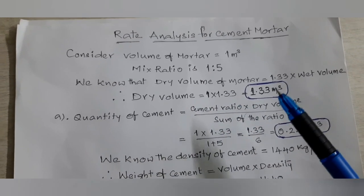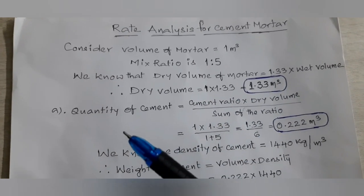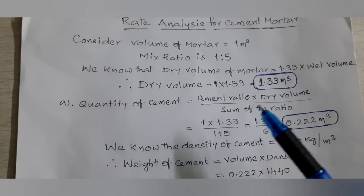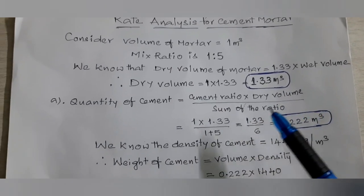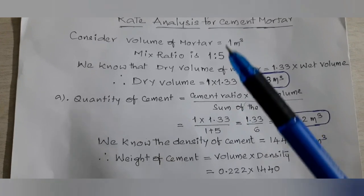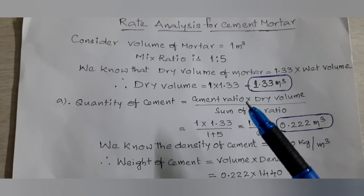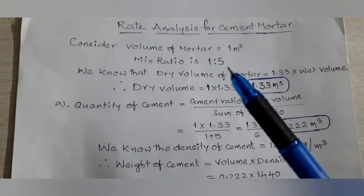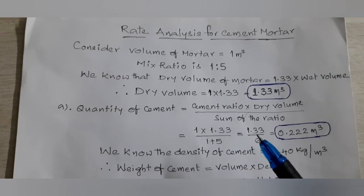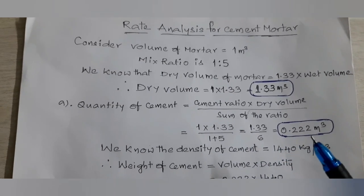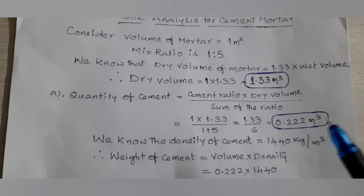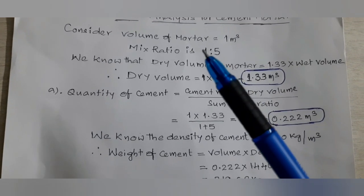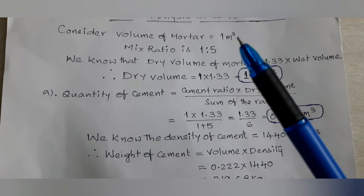First, we calculate the quantity of cement. Volume of cement equals cement ratio into dry volume of mortar divided by sum of the ratios. The cement ratio is 1, dry volume is 1.33 cubic meters, and the sum of ratios for 1:5 is 1 plus 5 equals 6. So cement volume equals 1.33 divided by 6, which equals 0.222 cubic meters.